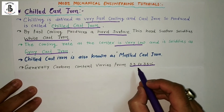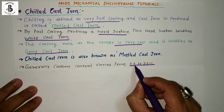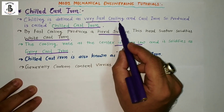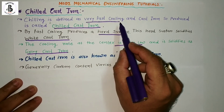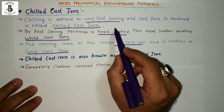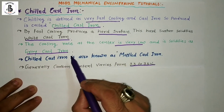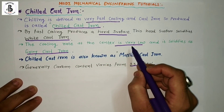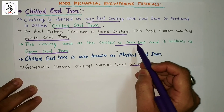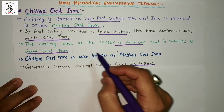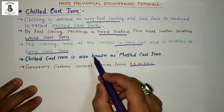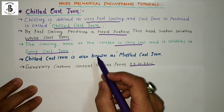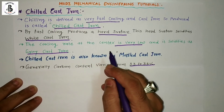As per the carbon percentage present in chilled cast iron and with very fast cooling, it produces a hardened structure at the outer periphery. With the slow cooling rate at the center, it acts as grey cast iron. Such characteristics of the material give it wide applications in the field of mechanical engineering.